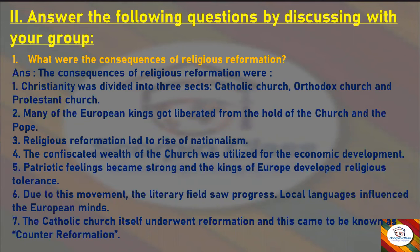Many of the European kings got liberated from the hold of the church and the Pope. Religious reformation led to the rise of nationalism. The confiscated wealth of the church was utilized for economic development. Patriotic feelings became strong and the kings of Europe developed religious tolerance. Due to this movement, the literary field saw progress and local languages influenced European minds. The Catholic Church itself underwent reformation, and this came to be known as Counter-Reformation.